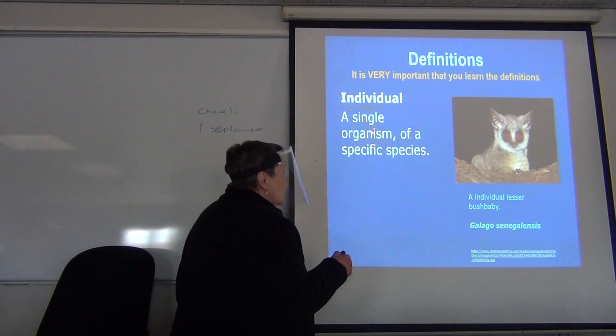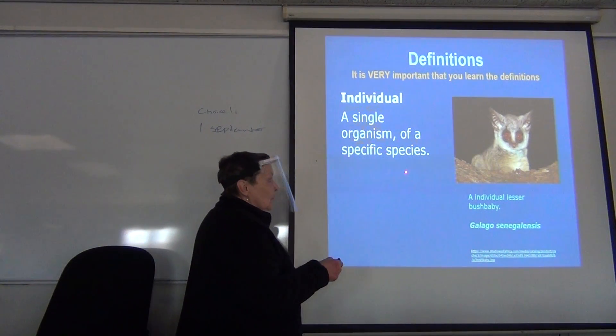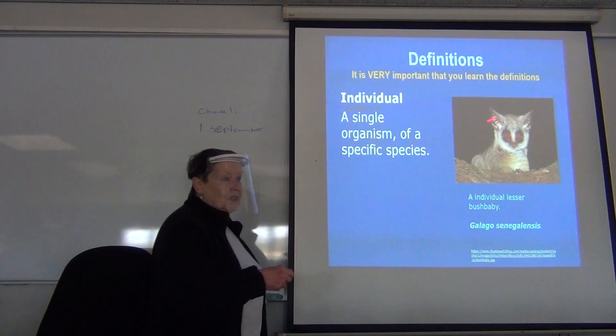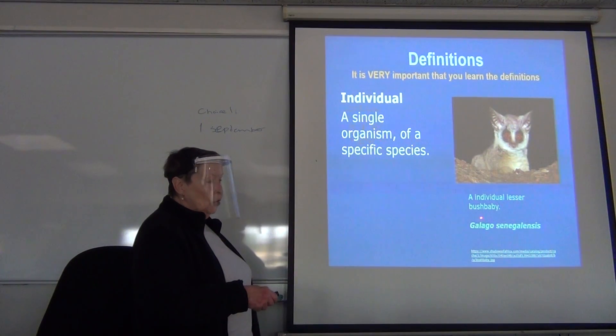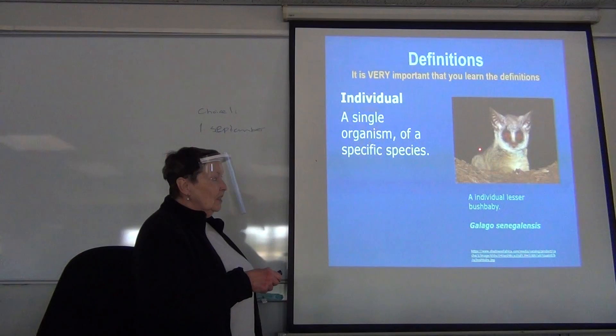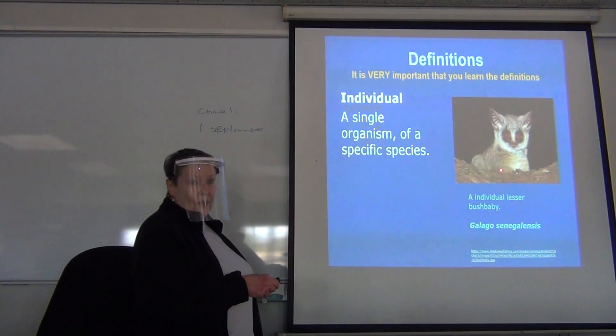An individual is a single organism of a specific species. For example, this is an individual — a lesser bush baby, which is an indigenous South African animal.